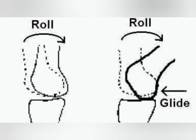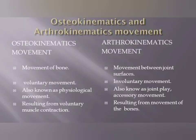If we talk about the difference: osteo is the movement of bones, and arthro is the movement of joints. Osteokinematics is a voluntary movement, while arthrokinematics is an involuntary movement. Imagine you are doing extension of your hand — you do that with your mind, but the joint movement is involuntary.